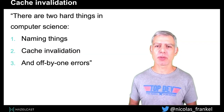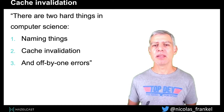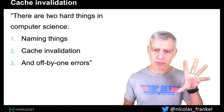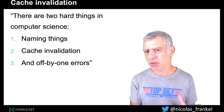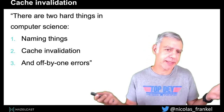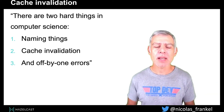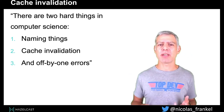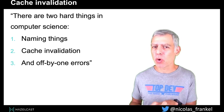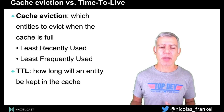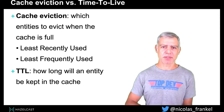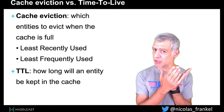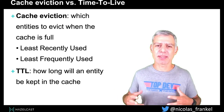You might have heard that there are two hard things in computer science: naming things, cache invalidation, and of course off-by-one errors. Cache invalidation is not only removing items from the cache — there are other reasons to remove items, and that other reason is cache eviction. There is a difference between cache eviction and cache invalidation.